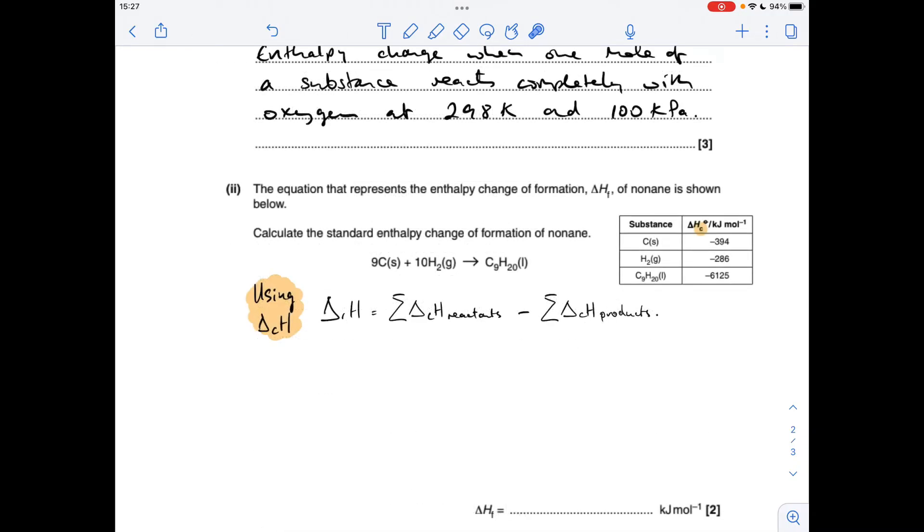Moving on to the calculations, so we've got to calculate the standard enthalpy change of formation of nonane, so this equation here, but we're using enthalpy changes of combustion values. So when you're using enthalpy changes of combustion, the enthalpy change that you're calculating is calculated by taking the sum of the enthalpy change of combustion of the reactants minus the sum of the enthalpy change of combustion of the products, which comes out at an answer of minus 281 kilojoules per mole.